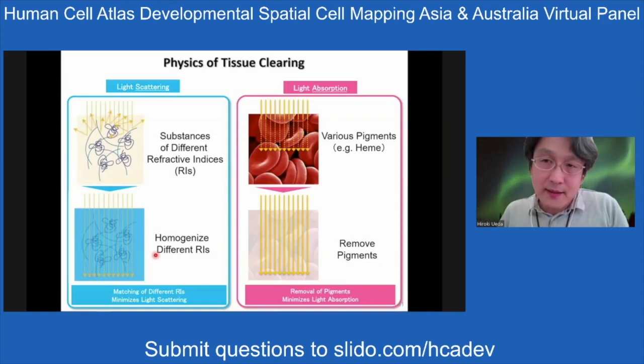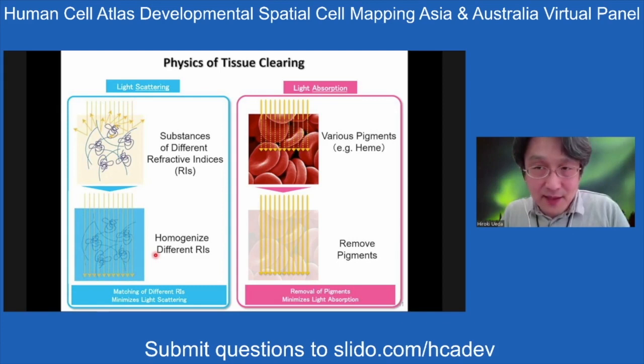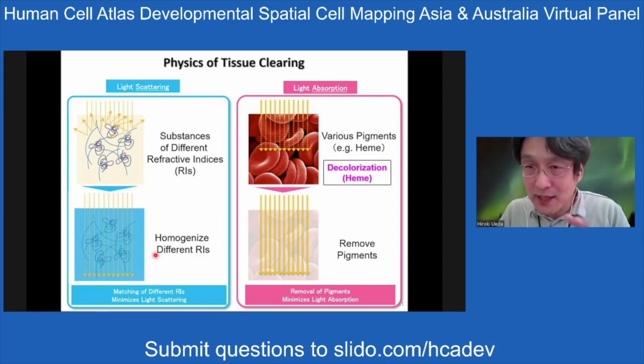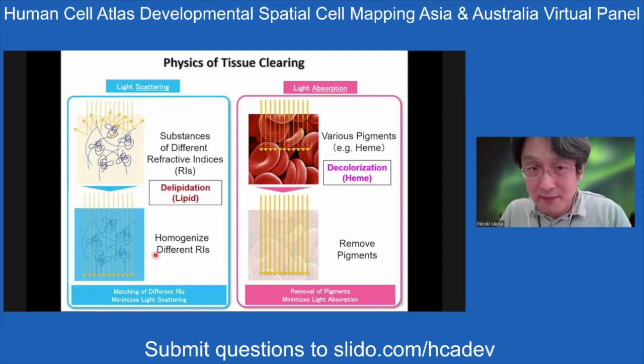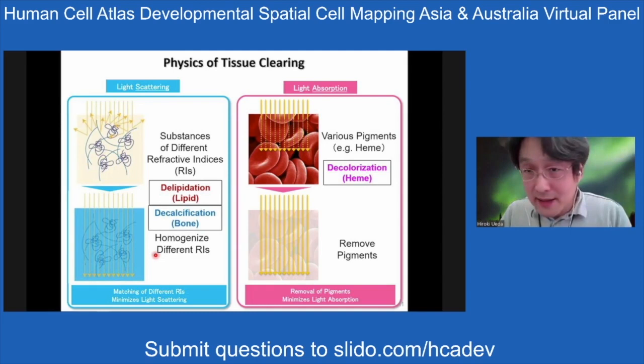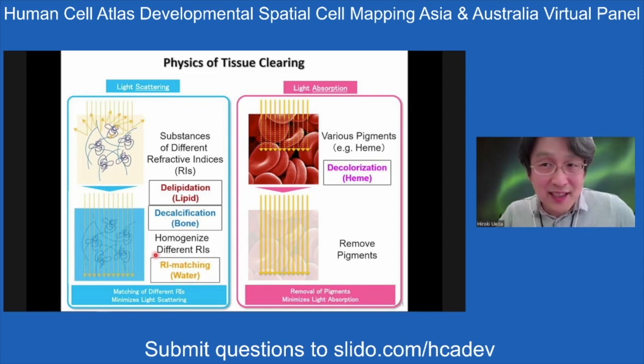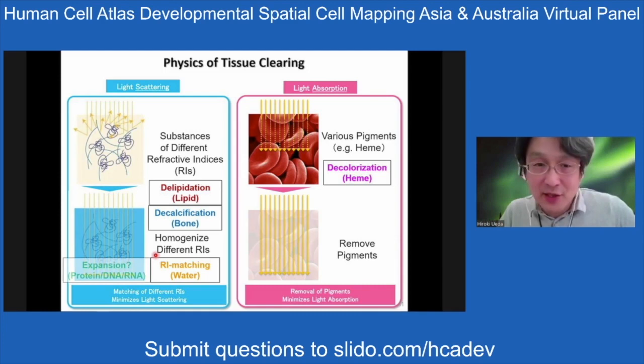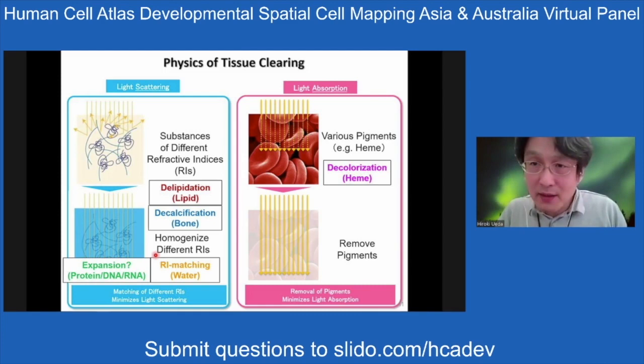At present, the physics of tissue clearing is well established, but regarding the chemistry we still don't know the exact underlying mechanisms — for example, decolorization, decalcification, and refractive index matching are all key for whole-body clearing, but the exact mechanisms remain unclear. Therefore, we performed chemical profiling of more than 1,600 chemicals and established five different assay systems to evaluate the elementary processes of tissue clearing, including delipidation, decolorization, decalcification, expansion, and RI matching. We found state-of-the-art hydrophilic reagents as well as chemical structures related to each process.